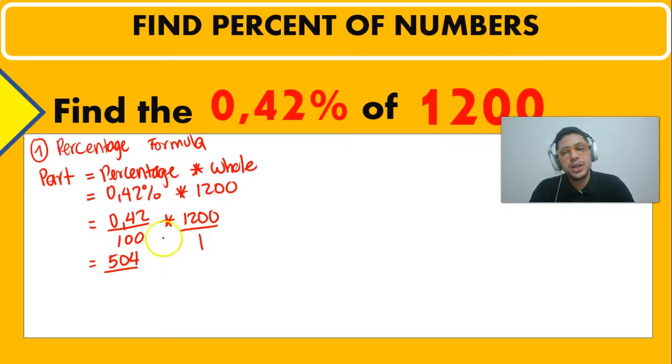And then the two denominators, which is 100 and 1, multiply. So 504 divided by 100 is 5.04. So that means that the 0.42% of 1,200 is just 5.04.